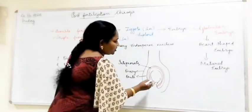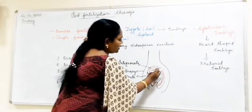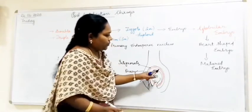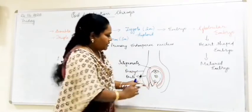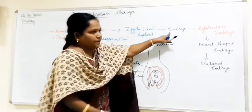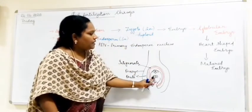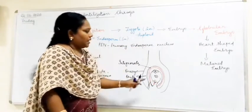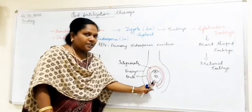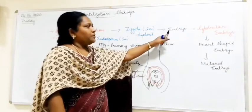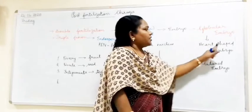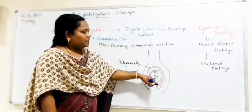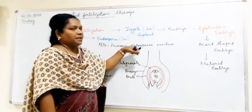You have learned about the synergids, the egg cell, the two polar nuclei, and the three antipodals. All of those will disintegrate — the antipodals and the synergids will disintegrate. The zygote develops into the embryo, and after the fusion of the male gamete and the female gamete, the zygote forms and develops further into globular embryo, arch-shaped embryo, and immature embryo. After the fusion of the male gamete with the polar nuclei, the primary endosperm nucleus is formed.